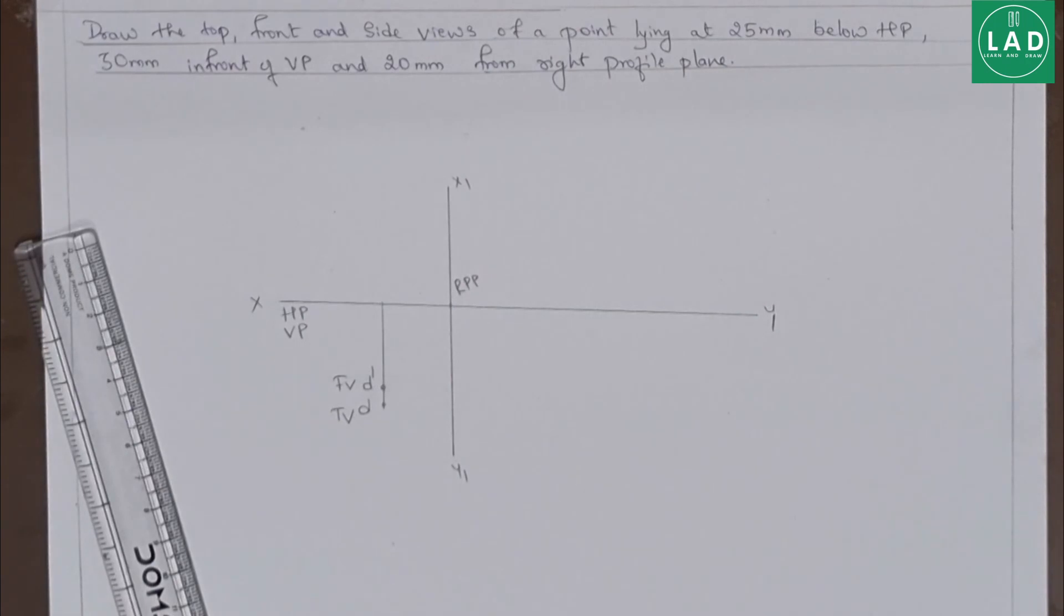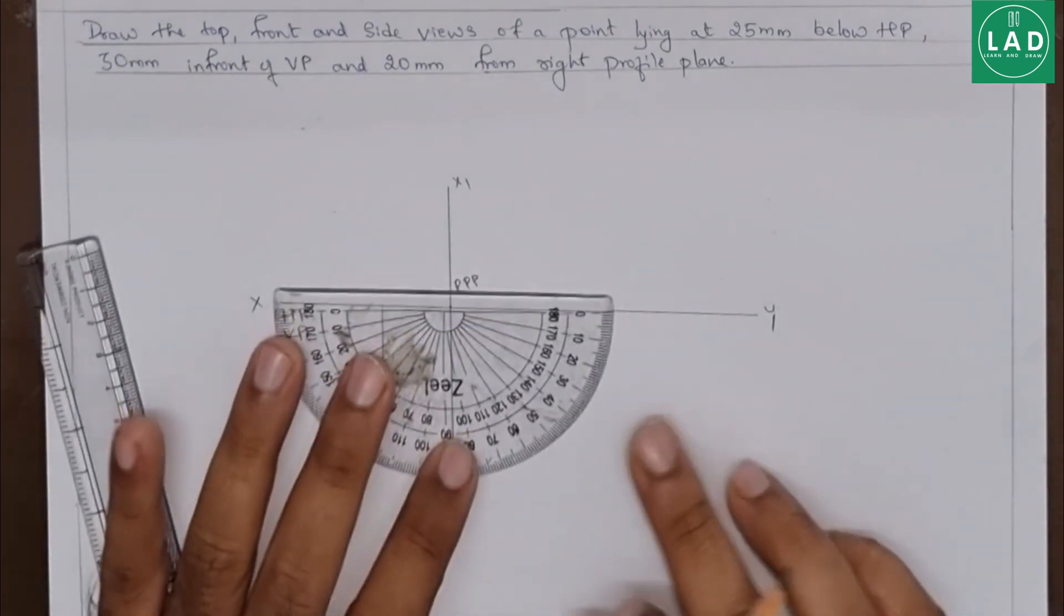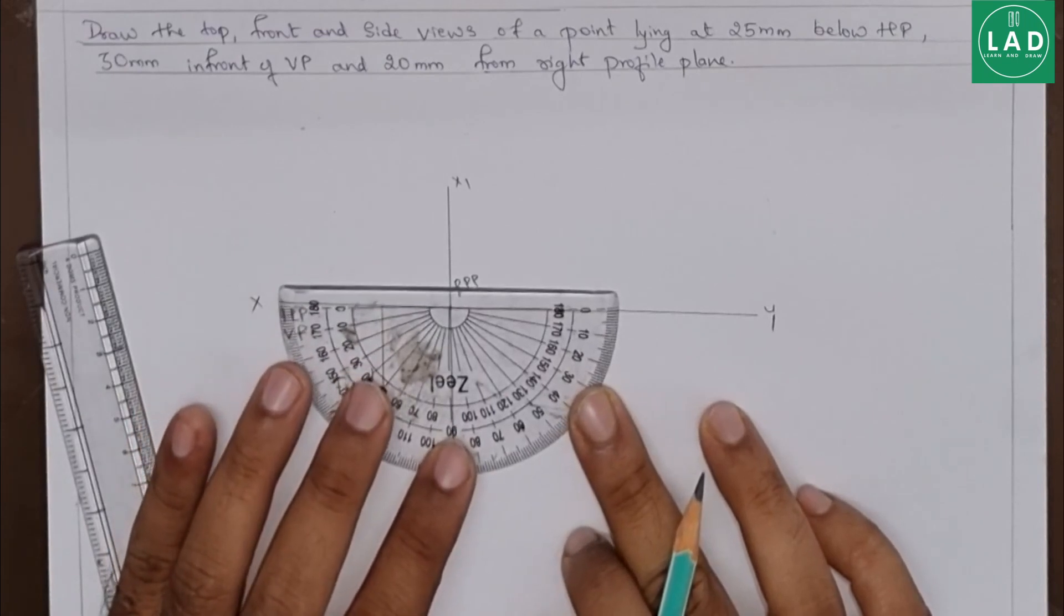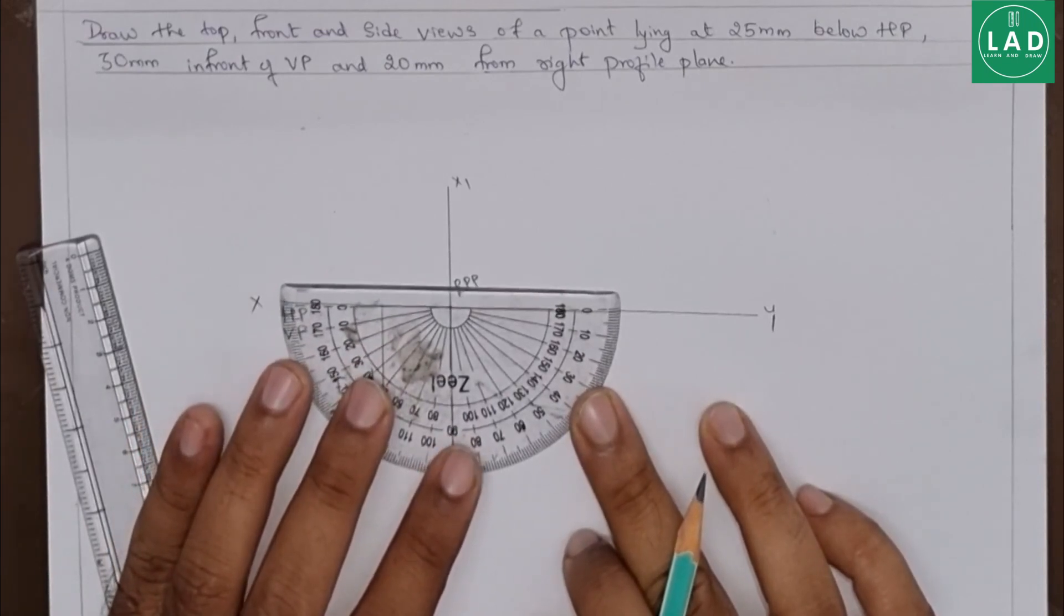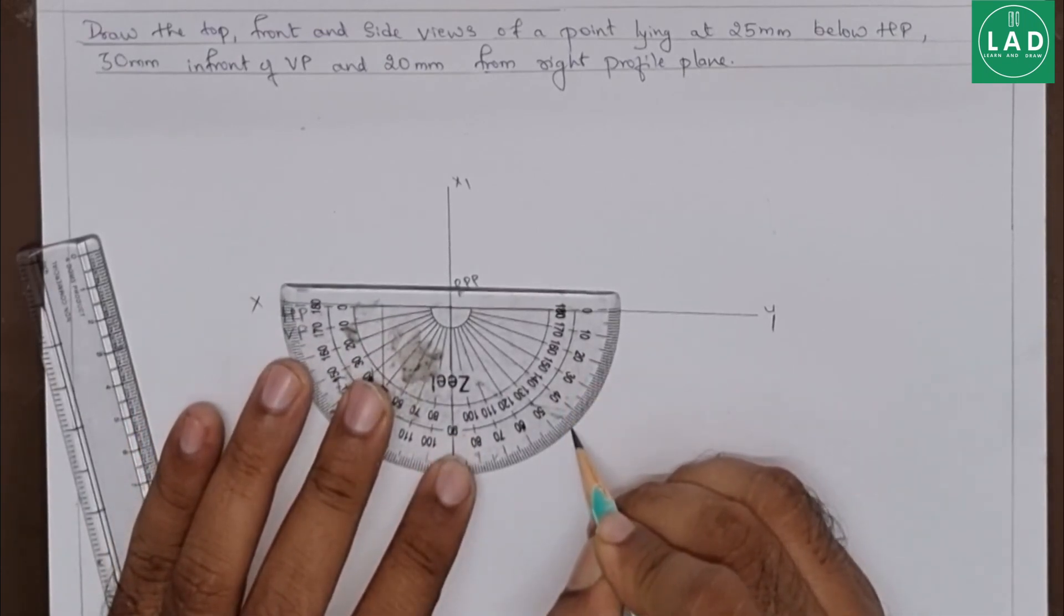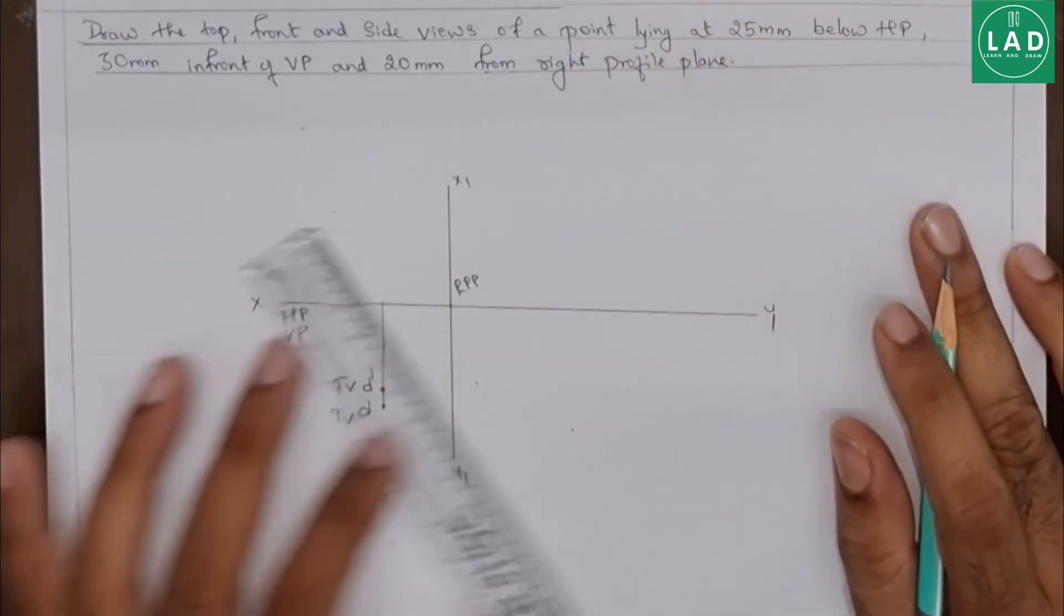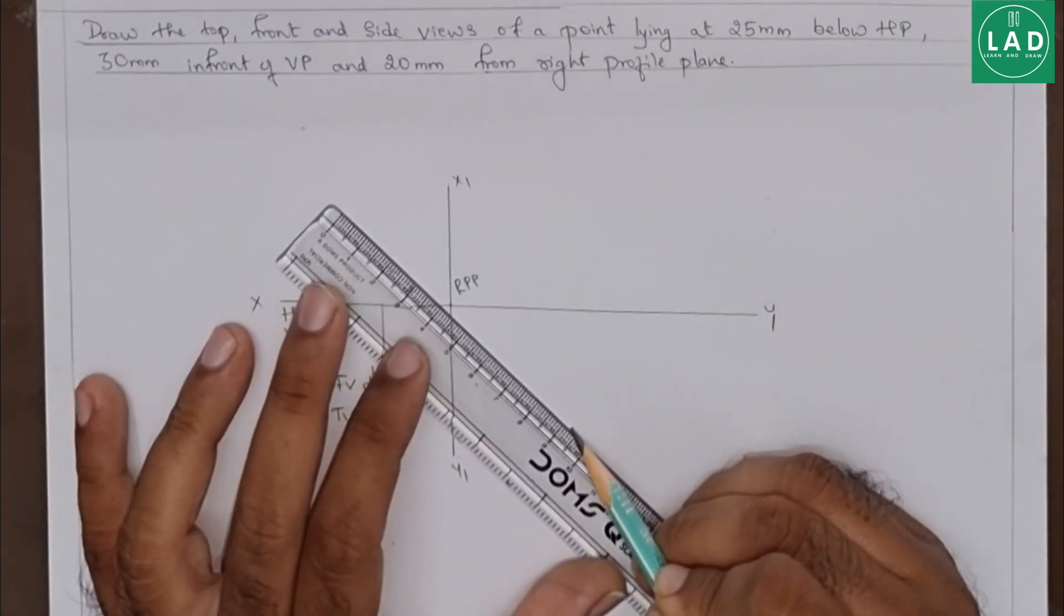Now to draw the side view, we have to draw the 45 degree line from the right profile plane. Here at this point, I will mark 45 degree and then join this point.